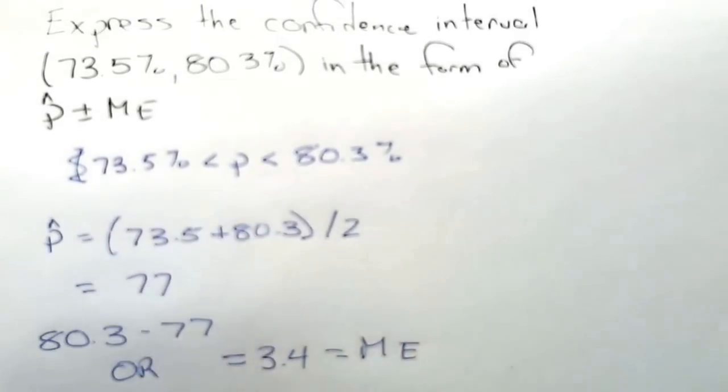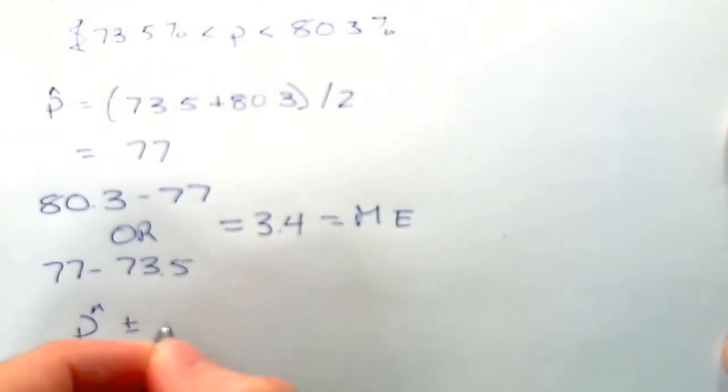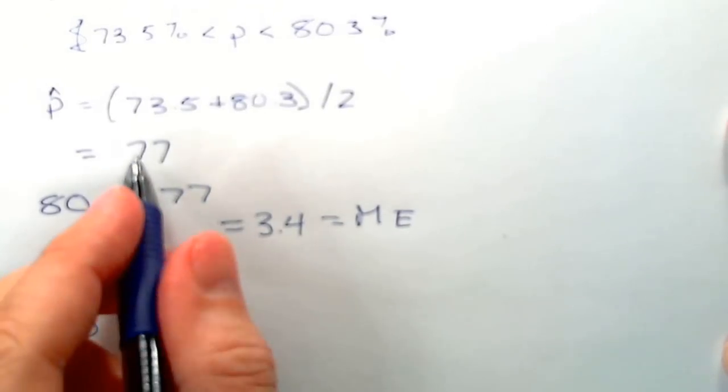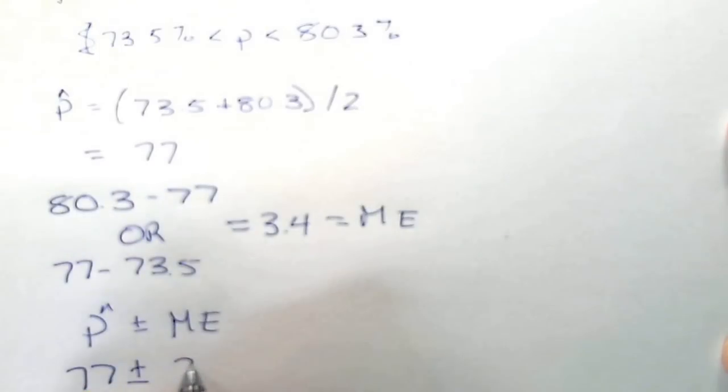Which is the margin of error. So the final solution is p hat plus or minus the margin of error, which is 77 plus or minus 3.4.